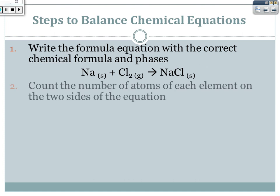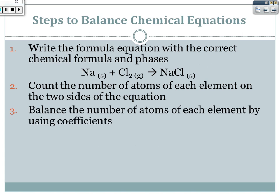The second step is to count the number of atoms of each element on both sides of the equation. On the left side I have one sodium and two chlorines; on the right I have one sodium and one chlorine. Since the chlorines don't match, I add a coefficient of 2 in front of NaCl. But now I have two sodiums on the right and only one on the left, so I also need a 2 in front of Na.